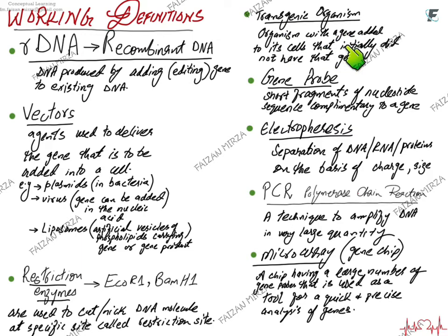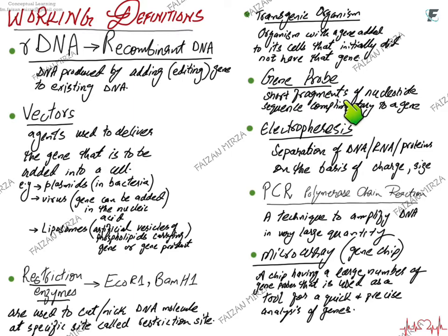Transgenic organisms are organisms with an added gene to their existing genome or nucleotide sequence. They end up having a gene they initially did not have, making them genetically modified organisms. We use the terms transgenic organisms and GMO interchangeably. Gene probes are short fragments of nucleotide sequences — a single strand of DNA or RNA complementary to a gene — used to identify a specific gene.